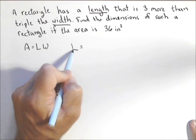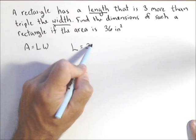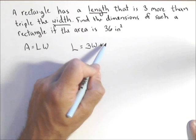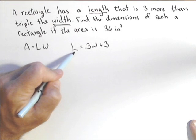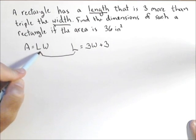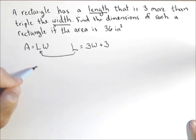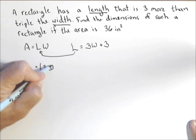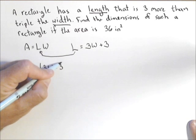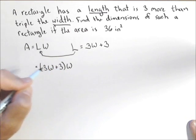So as an equation, length is equal to triple the width and then three more, so plus three. Now what we're going to do is take that L and substitute it into our equation for area to get it all in terms of one variable. So we got three W plus three times W is A.